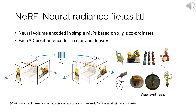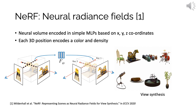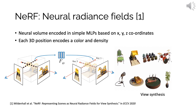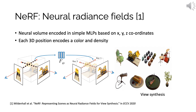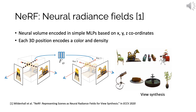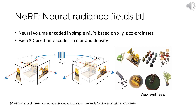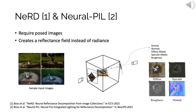We can also use the reconstructions for object interactions and physics simulations. Our method is based on NeRF, which optimizes a neural volume from multi-view images. Color and densities of 3D coordinates are encoded in a multi-layer perceptron, and novel views can be synthesized with volume rendering. NERD and Neural Pill extend this approach by optimizing a reflectance volume instead of radiance, enabling relighting as in our method.